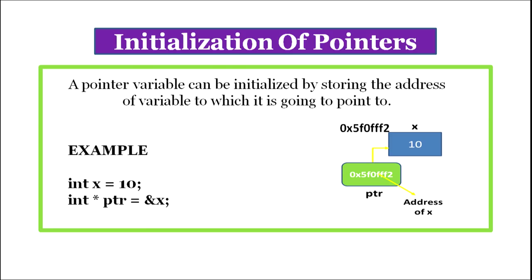Initialization of pointers. A pointer variable can be initialized by storing the address of the variable to which it is going to point to. For example: int x equal to 10 — two bytes of memory will be allocated to x and value 10 will be stored there. The next statement is int star ptr, ptr equal to ampersand x. So ptr is a pointer of type integer. Ampersand means address of, so we are storing the address of x in ptr. ptr is a pointer variable and instead of holding a value it is holding an address of a variable.